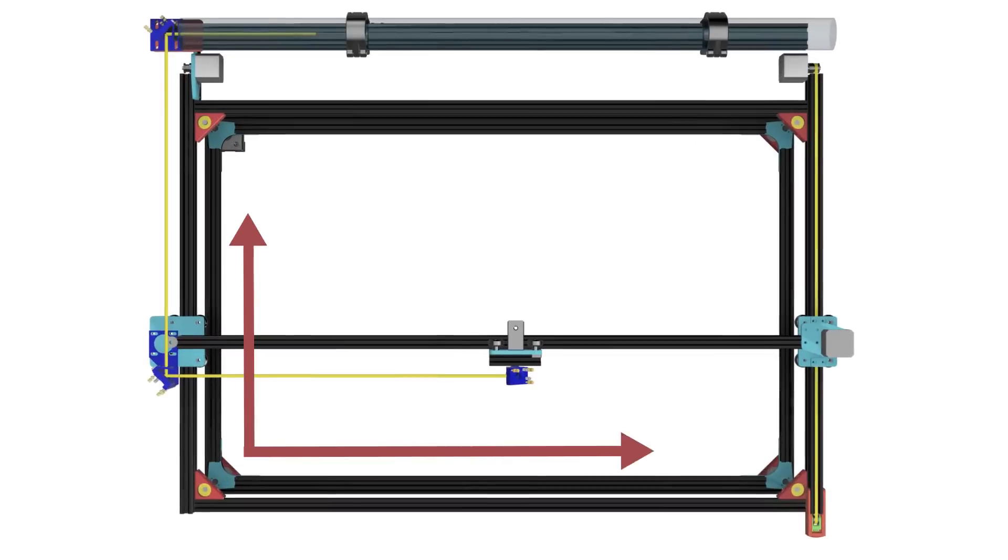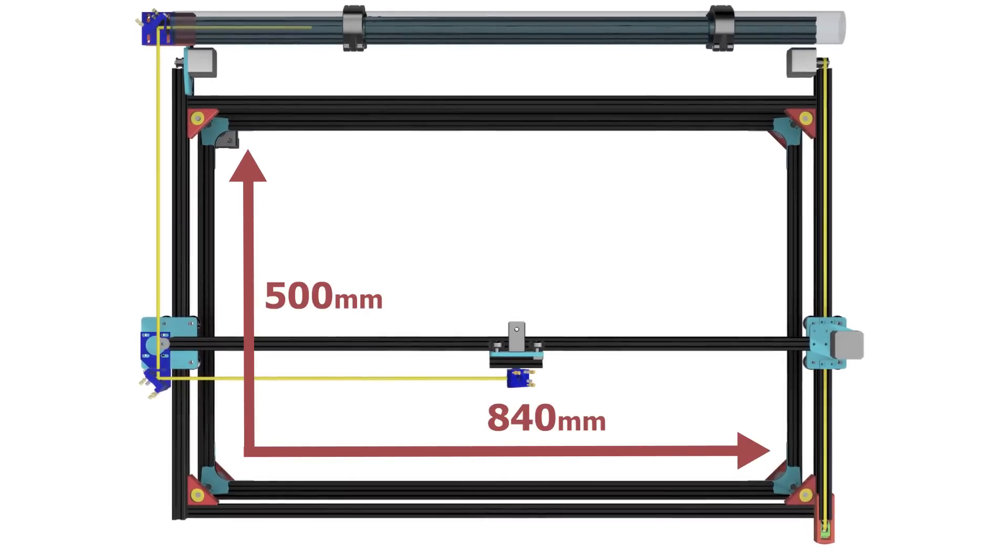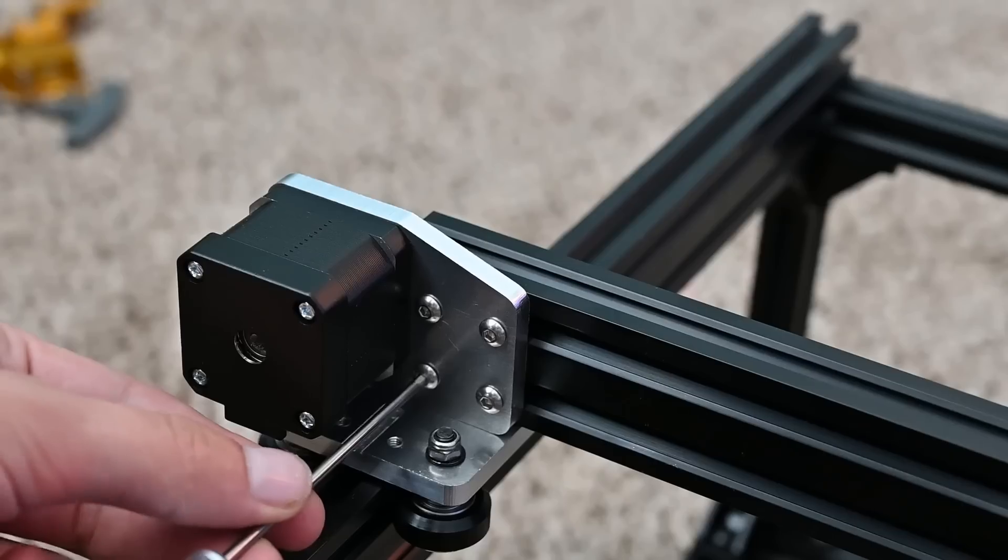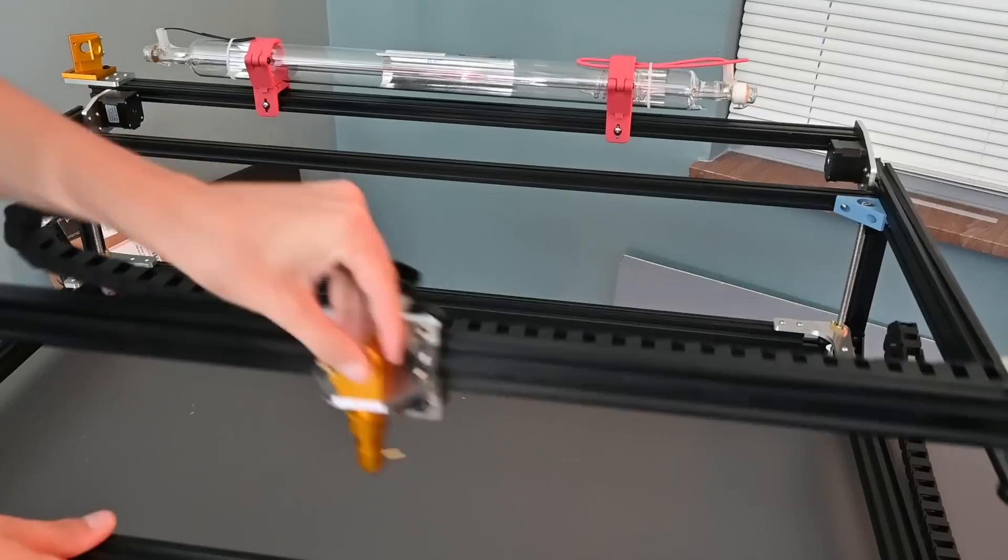It will have cutting dimensions of about 33 by 20 inches or 840 by 500 millimeters for all of our metric friends out there. In the next couple videos I'm going to show you how I assembled this, wired it up, and eventually some projects I make with it.